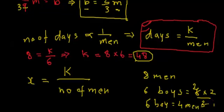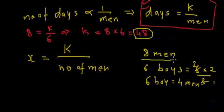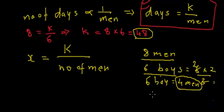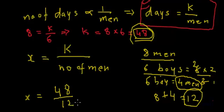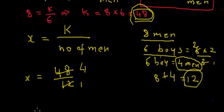So the total number of men we have: eight men plus six boys, and six boys are equal to four men, so the total number of men at work will be eight plus four, that is twelve. From here, the number of days x equals k — that is 48 — divided by the number of men, which is 12. 12 fours are 48, so the same job with eight men and six boys can be finished in four days.